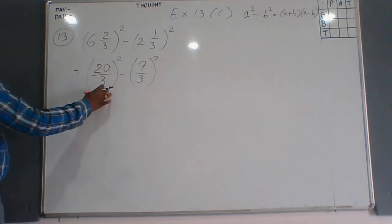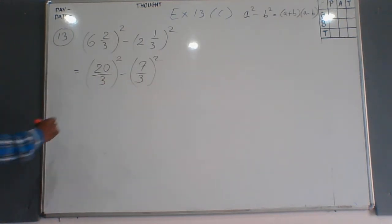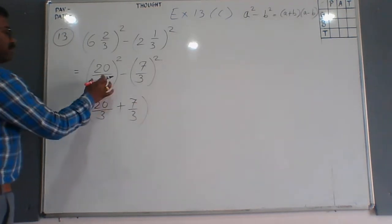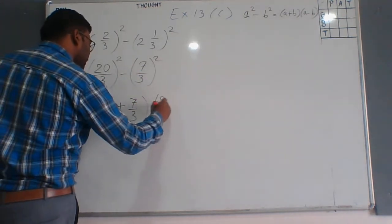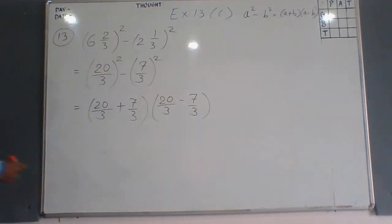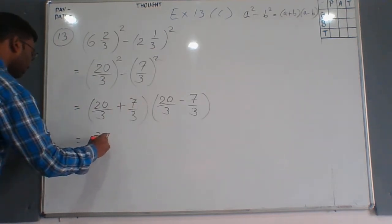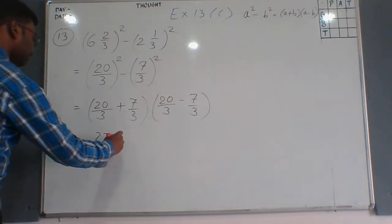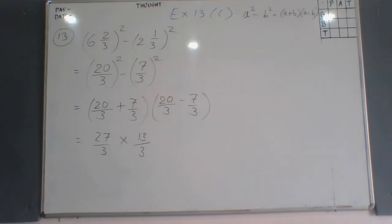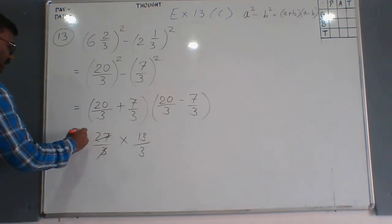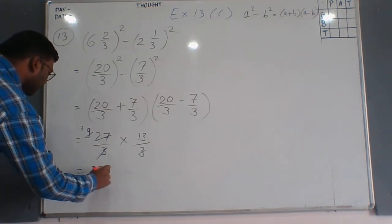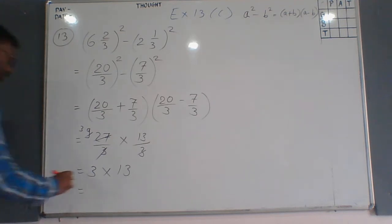Let us consider the first number as a and the second as b. It is in the form a²-b², so we write (a+b)(a-b): that is (20/3 + 7/3)(20/3 - 7/3). This gives (27/3)(13/3). Cancelling: 27/3 = 9 and we get 9 × 13/3. Then 3 into 9 is 3, and 3×13 is 39. So 39 is our final answer.